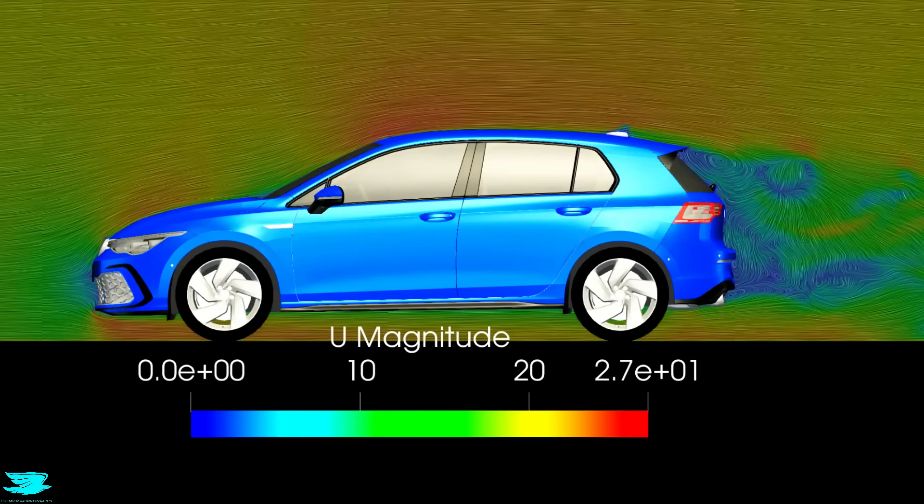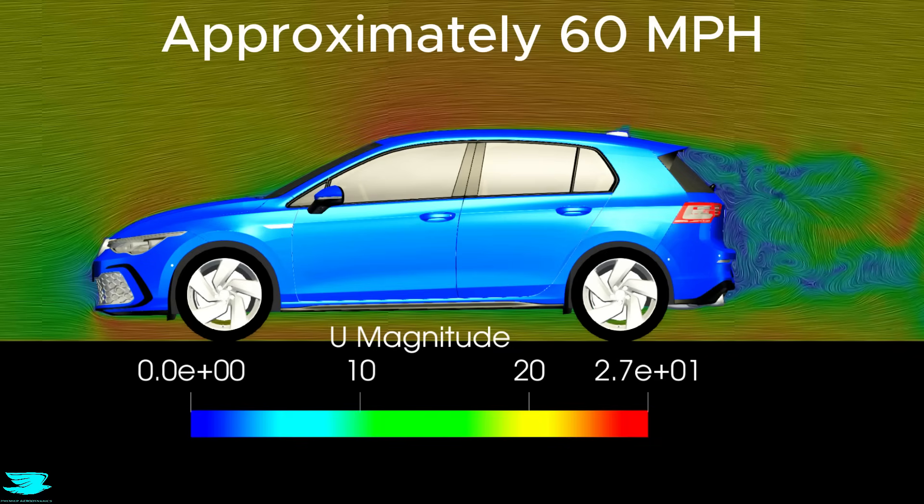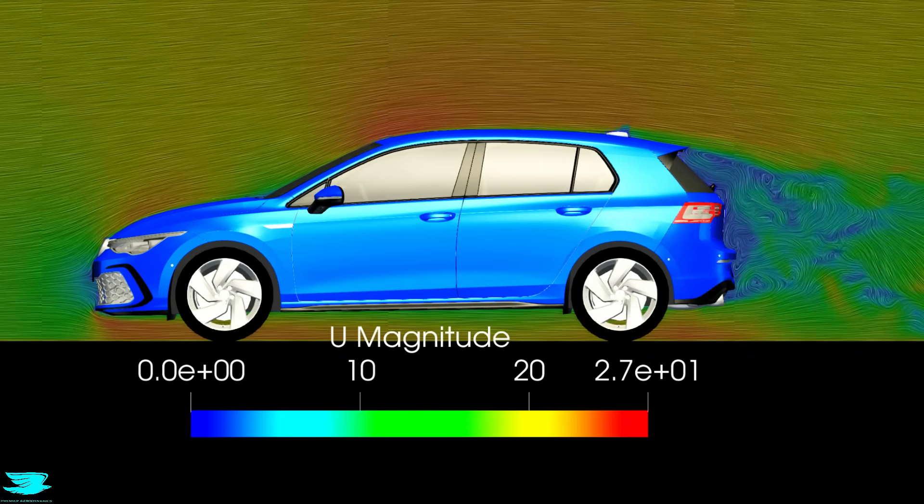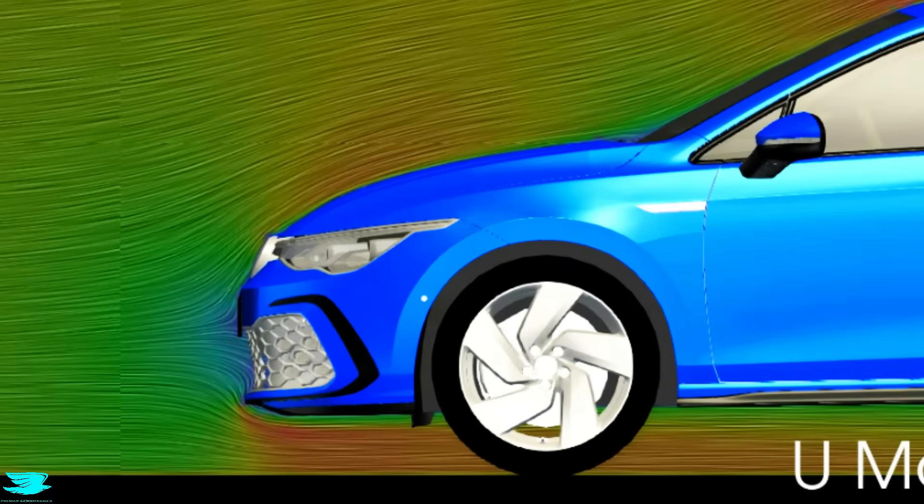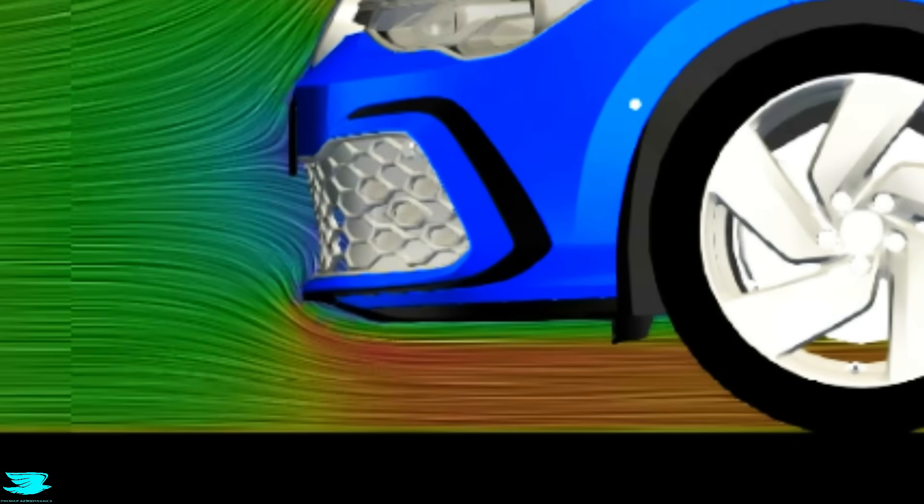So this plane slices right down the center of the car and is again colored in the velocity. Red is 27 meters per second and blue is 0 meters per second. There are also little lines showing what the flow is doing, so we can see all these little details of how the air is moving. Initially, the flow looks really good. For example, underneath the front, the flow is really good.